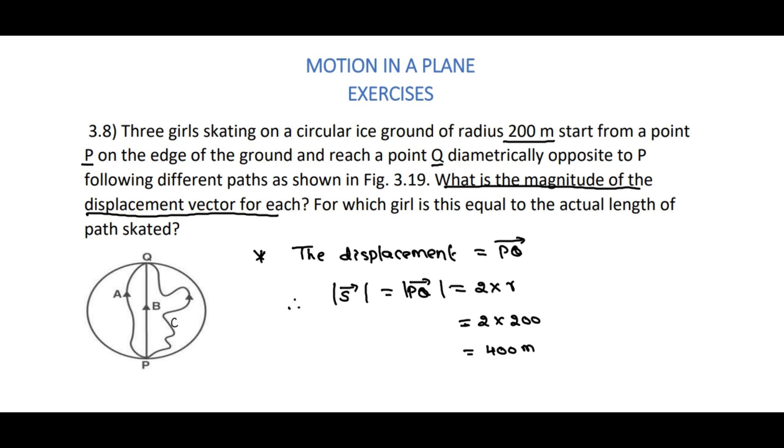Coming to one more sub-question: for which girl is this equal to the actual length of the path skated? Here, girl A is traveling from point P to point Q along this curve, and C is also traveling from P to Q in another curve. In this case, the distance traveled by A and C is not equal to displacement.